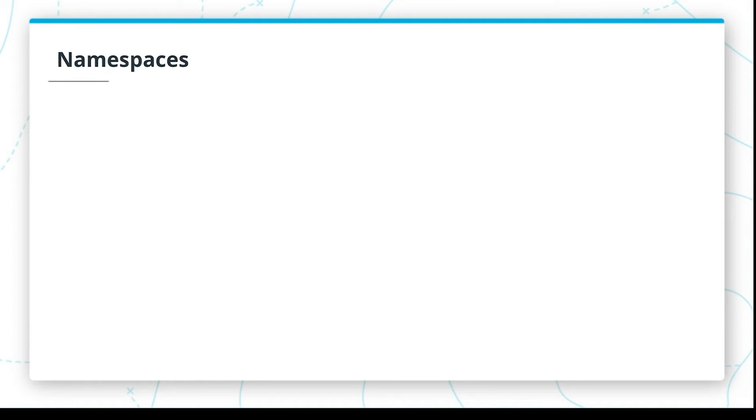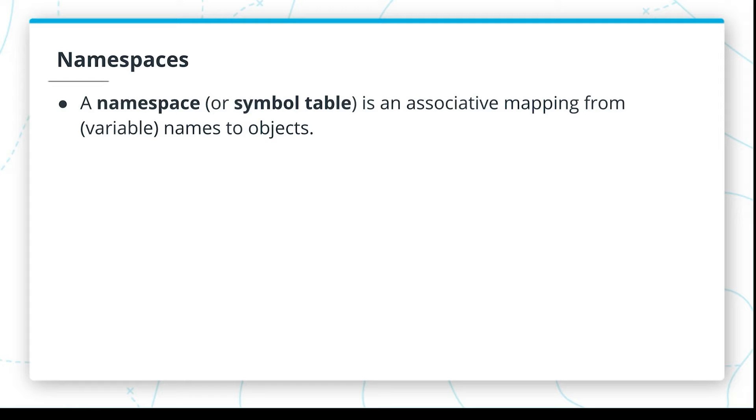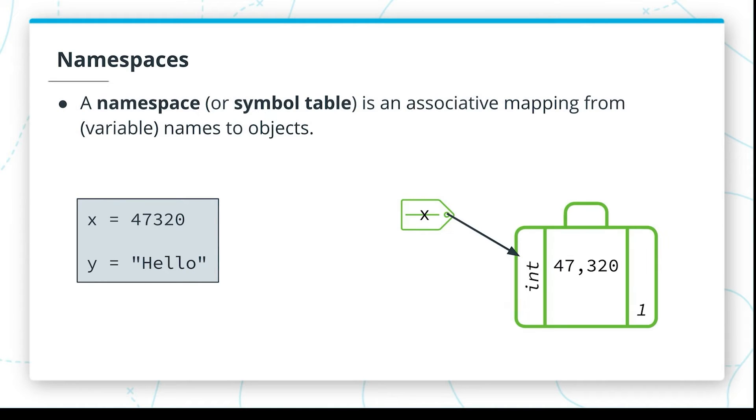So how does Python keep track of all of these? Python uses the idea of namespaces. Those will be mappings from names to objects. So if we have the lines of code x equals 47,320 and y equals the string hello, we end up with one mapping from the name x to a Python object and one mapping from the name y to some other Python object.